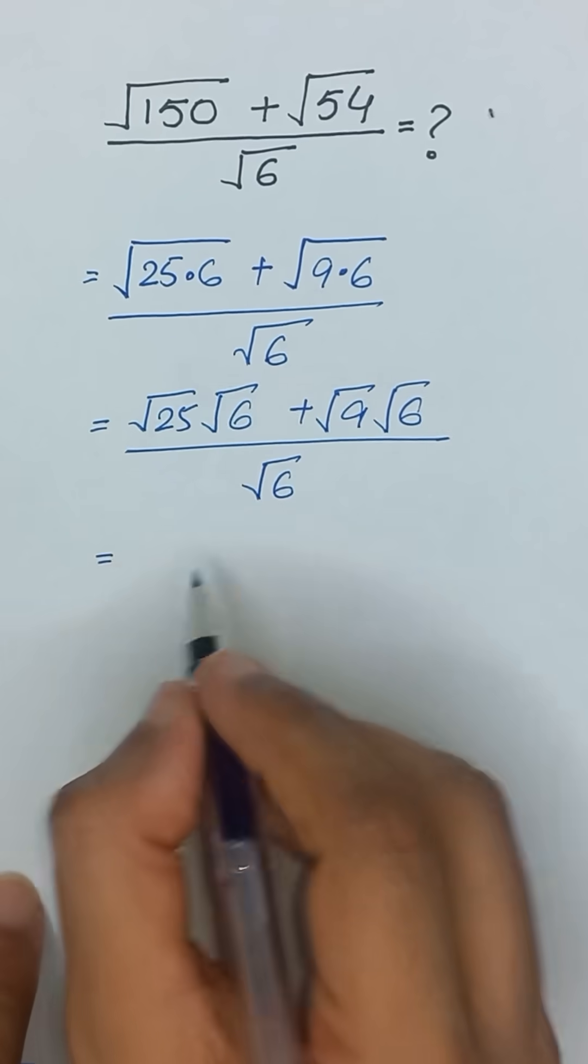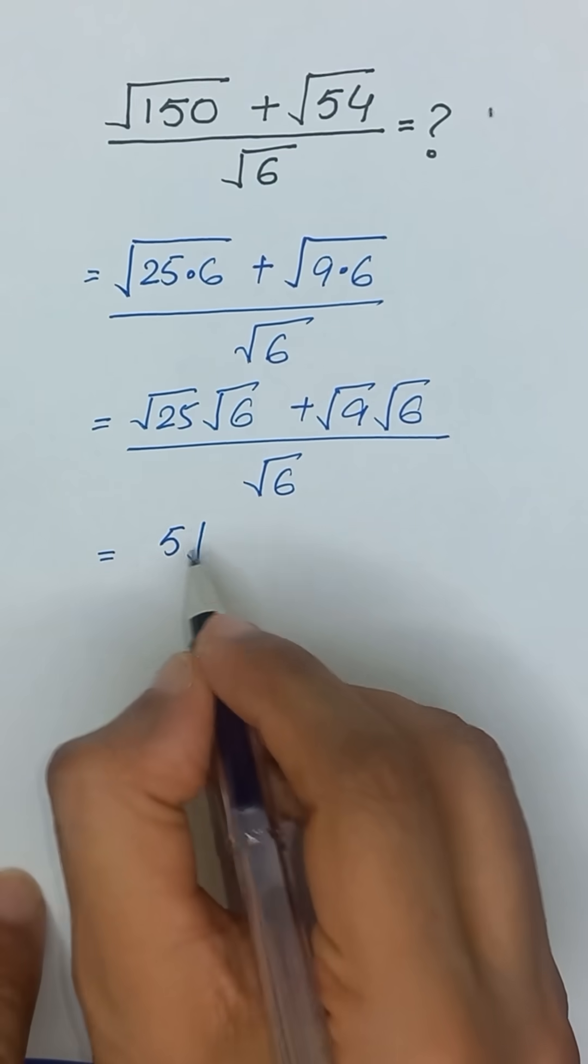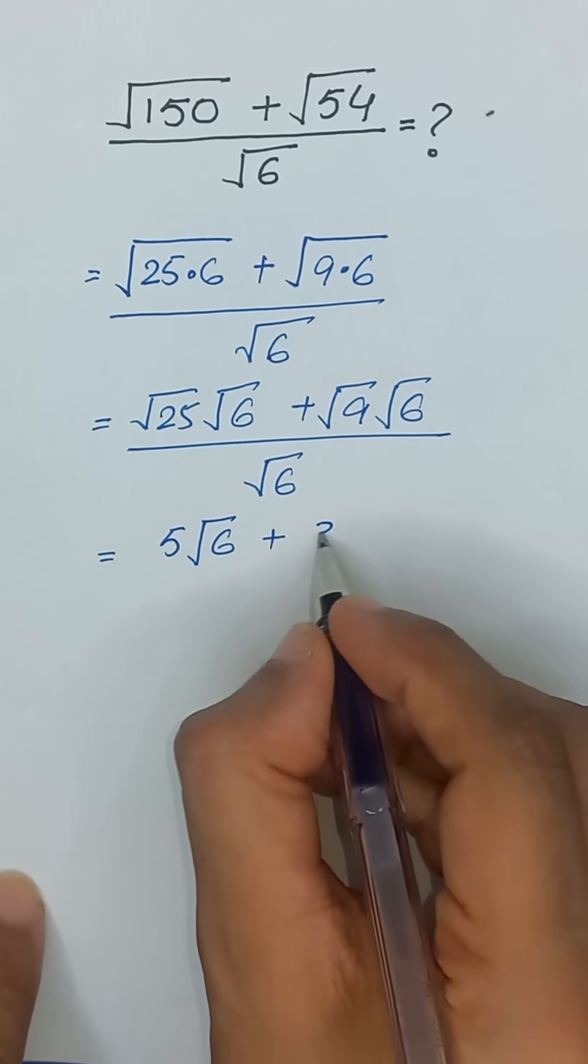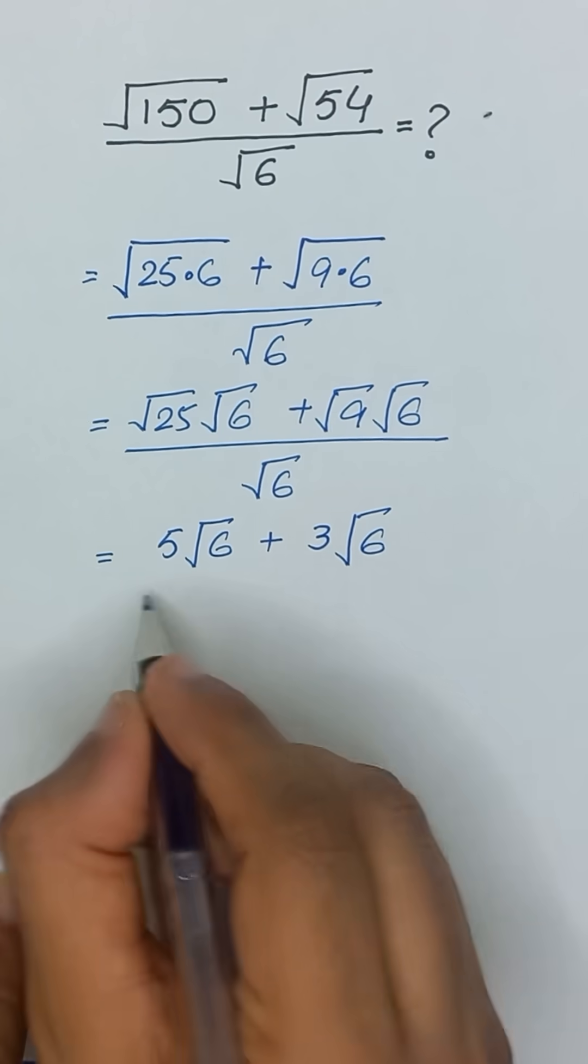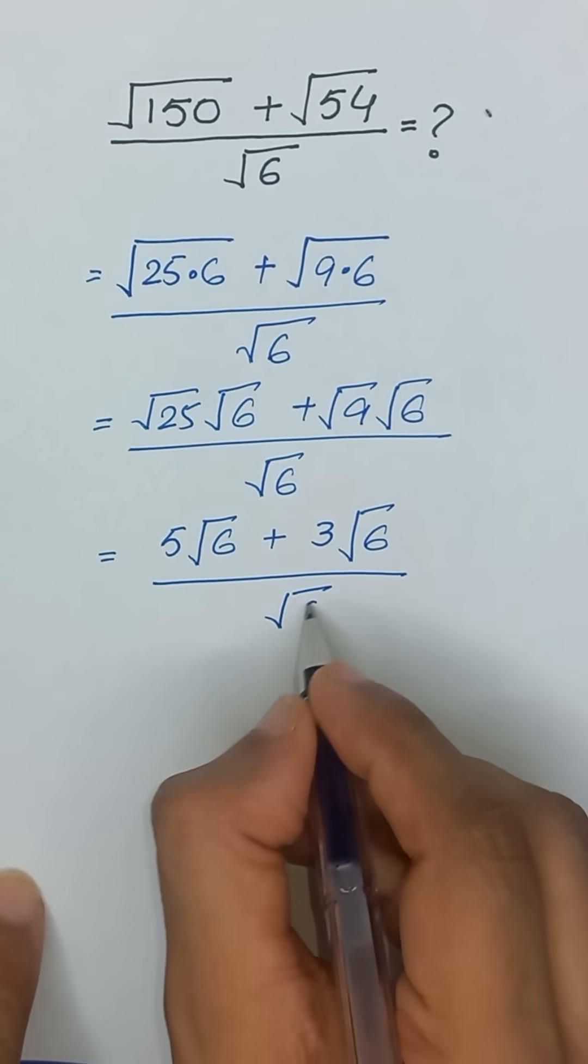Square root of 25 is 5 times square root of 6 plus square root of 9 is 3 square root of 6 divided by square root of 6.